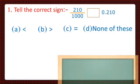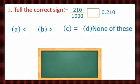Put the correct sign. So the fraction given is 210 by 1000 and on the other side the decimal form is 0.210. Four options are given in which different signs are given and we have to tick the correct sign. First of all students, let's convert the given fraction into decimal form so that we can compare the values.